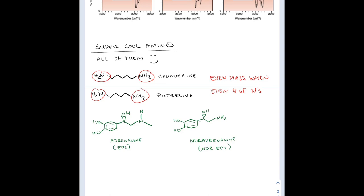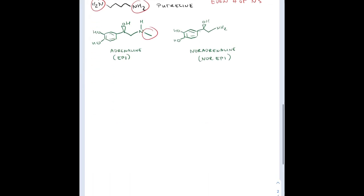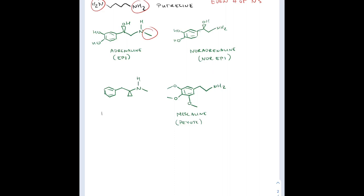There's also things like adrenaline, or epinephrine, and noradrenaline, or norepinephrine. The only difference between these two is that methyl group circled — that's all. That's kind of how it is with drugs in general: if you change one small thing on a functional group or in a specific area, it's going to change its functionality.